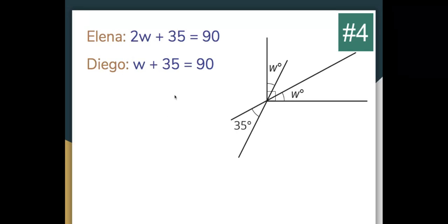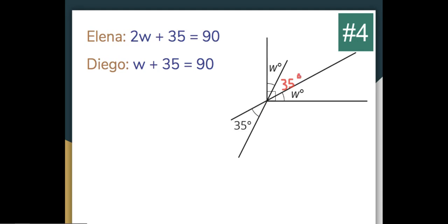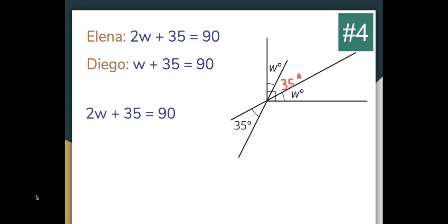For the fourth situation, Elena believes 2W plus 35 equals 90 and Diego thinks W plus 35 equals 90. We see the box indicating these three angles form a right angle. We recognize that one angle and another are vertical, so that angle must also be 35 degrees. Therefore W plus 35 plus another W gives Elena's equation — 2W plus 35 equals 90 — which is the correct answer.